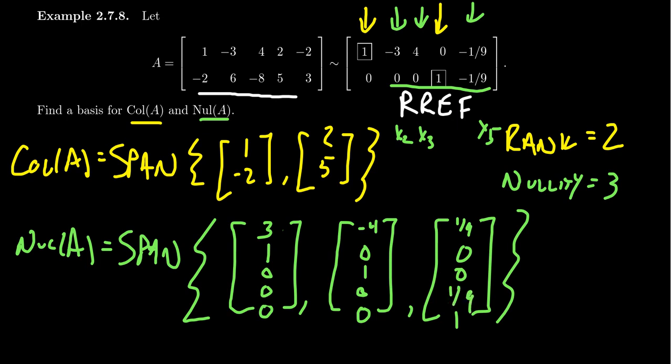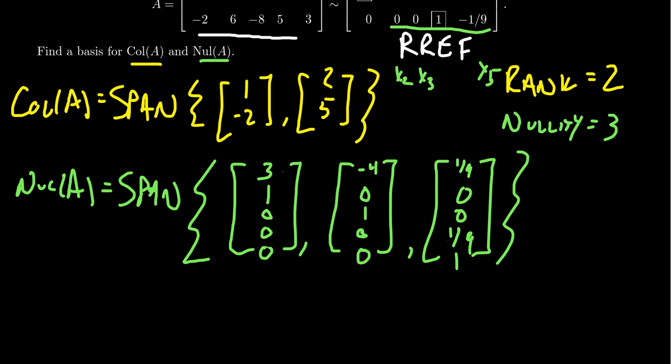And now we have a basis for the null space. 3, 1, 0, 0, 0, negative 4, 0, 1, 0, 0, and 1/9, 0, 0, 1/9, 1.